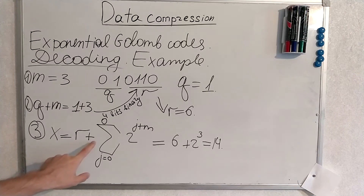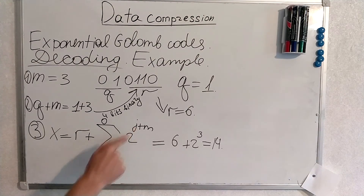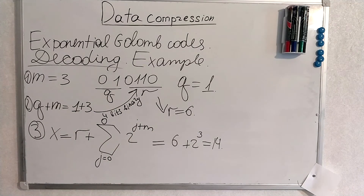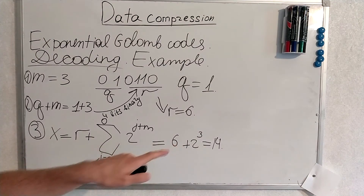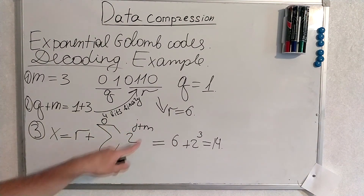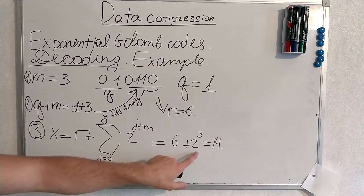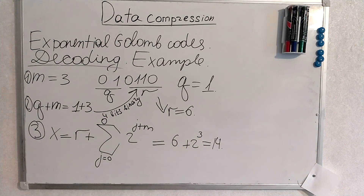Then we determine how much X is by plugging all the numbers we produced into the formula. R is 6 plus this sum. The sum is also empty because this is just the reversed encoding example, but you will just plug in J's here if the sum wouldn't be empty. So the final result is R plus the result of this summation — that's 6 plus 2 to the power of 3. That's it.